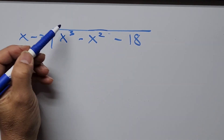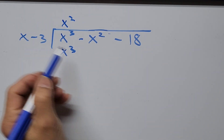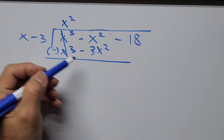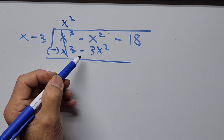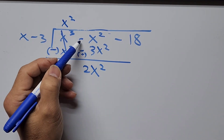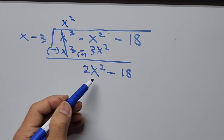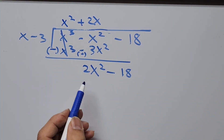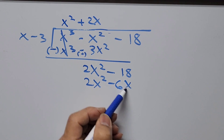Performing long division of x cubed minus x squared minus 18 by x minus 3: x cubed divided by x gives x squared. Then x squared times x is x cubed, and x squared times negative 3 is minus 3x squared. Subtracting, x squared minus 3x squared gives 2x squared. Bringing down terms, and continuing: 2x times x is 2x squared, and 2x times negative 3 is minus 6x.